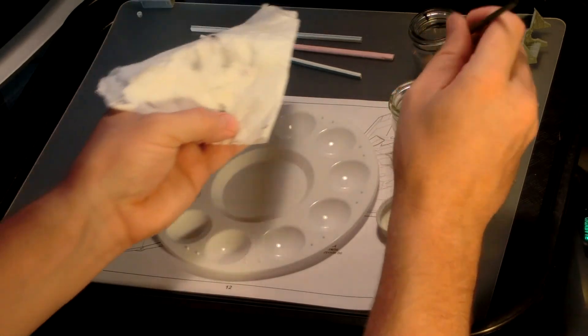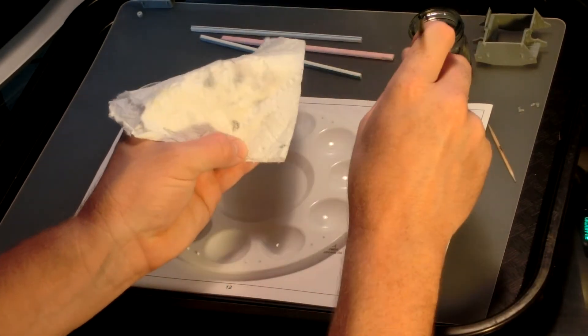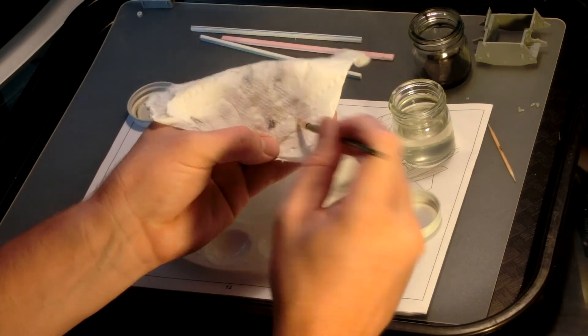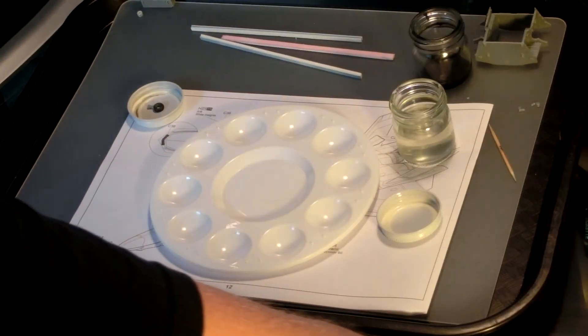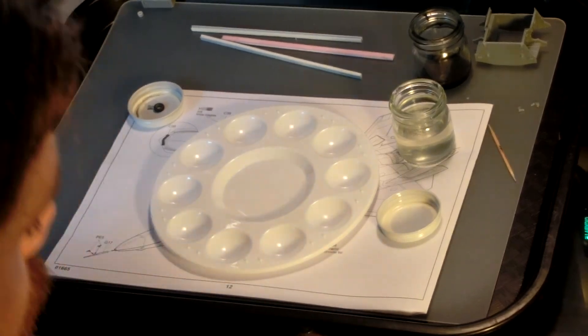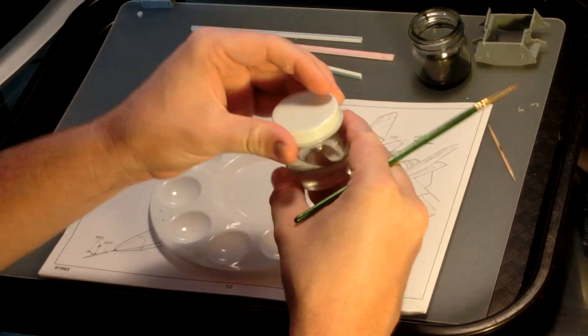You then run the paintbrush along a clean section of paper towel, moving from handle to tip of the bristles. Don't squish the bristles or rub them backwards, as it will eventually ruin the paintbrush's shape. Repeat this until the paintbrush doesn't leave any paint color on the paper towel.